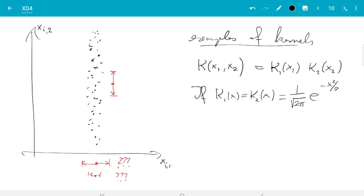...then in this example the kernel we would get is - well we multiply the two, so the pre-factors multiplied give 1 over 2π, and the exponentials multiplied are e^(-x1²/2) times e^(-x2²/2), so we can combine them and write e^(-(x1² + x2²)/2). So that would be a kernel, and you see that's rotationally symmetric, so x1 and x2 look exactly the same for this kernel.